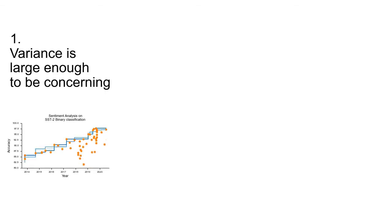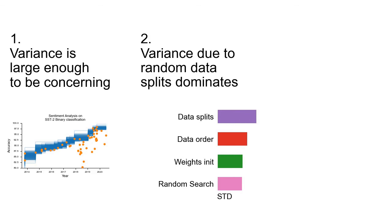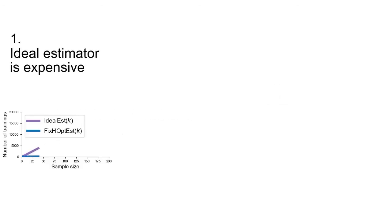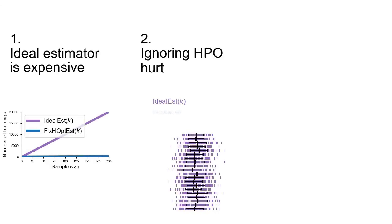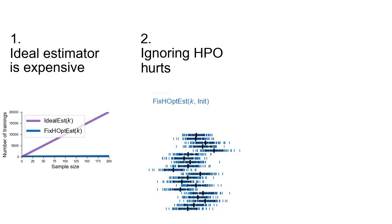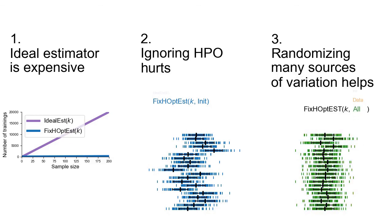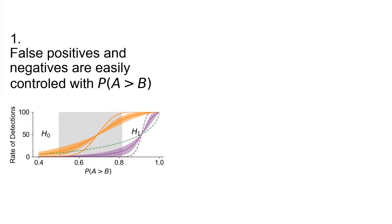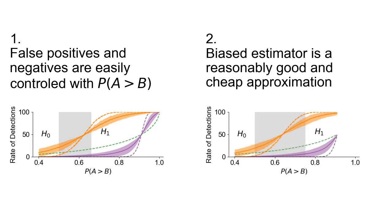Recap. About variance: 1. Variance is large enough to be concerning — it should not be ignored when benchmarking learning algorithms. 2. Variance due to random data splits dominates — we should avoid using fixed splits. 3. Variance due to hyperparameter optimization is important — we must account for it. About mean performance estimation: 1. The ideal estimator is expensive and rarely usable in practice. 2. Ignoring variance due to hyperparameter optimization hurts the quality of our mean performance estimation. 3. Randomizing all other sources of variance helps reduce the loss of quality. About comparison methods: 1. A statistical test accounts for variance and is more reliable than a naive average comparison, for which it is difficult to choose a good delta. 2. The biased estimator degrades the reliability of the statistical test but is still a major improvement over single point comparison or average comparison methods.